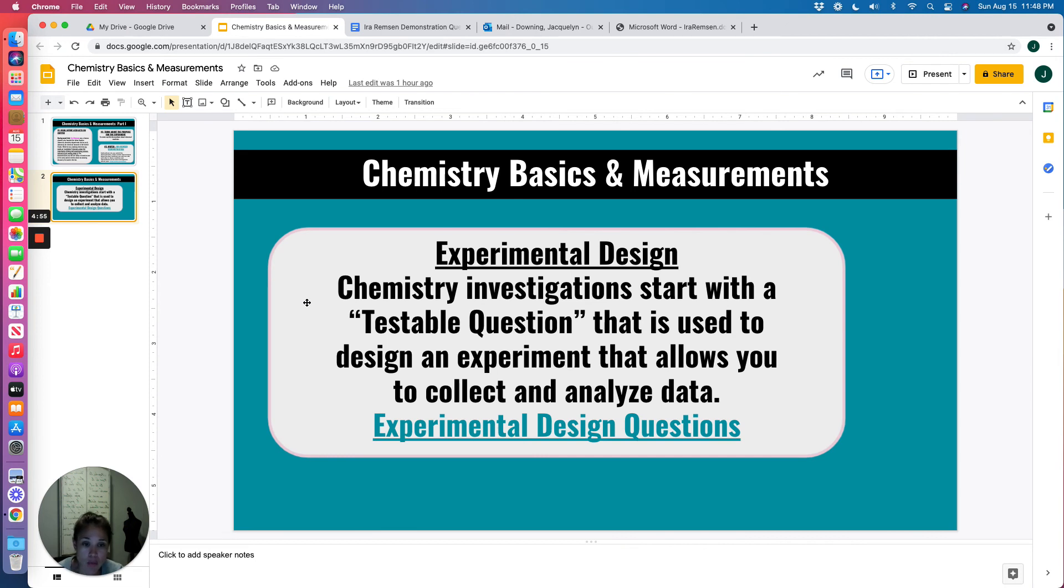Now Ira Remsen, his testable question was hopefully you can figure it out, but it has to do with how nitric acid reacts with copper. Now there's one thing he had missing in his experiment. But just by reading this, hopefully you can realize what he was missing and we can talk about that. Please turn this in at the end of the day for a small classwork grade.